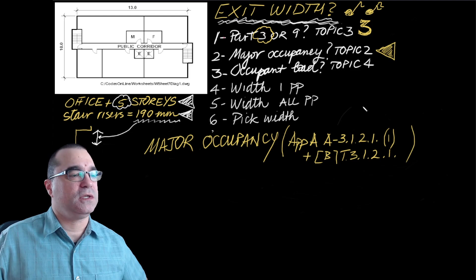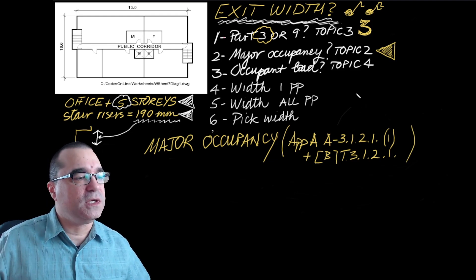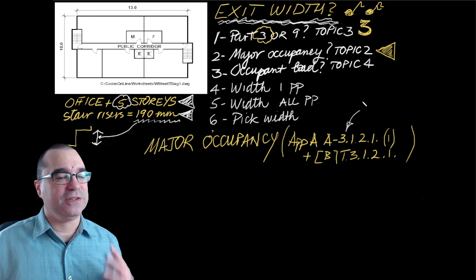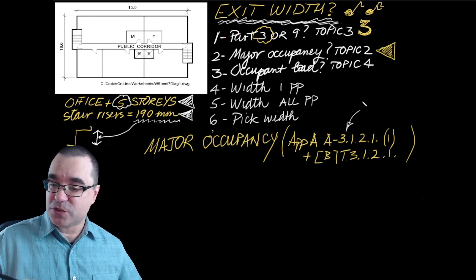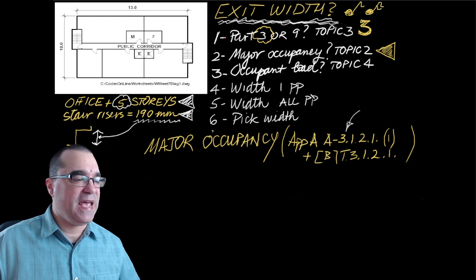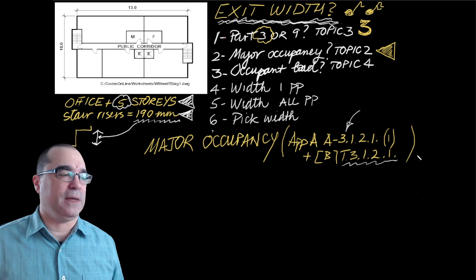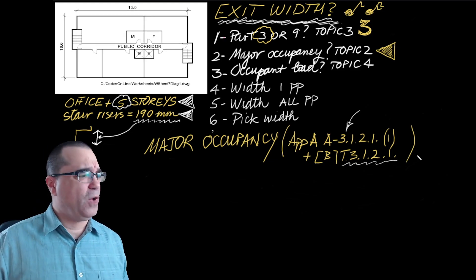My recommendation is to start first with Appendix A because this has the list of all the types of buildings. And then once we find our building under Appendix A, then we're going to go to Table 3.1.2.1 and that will give us the name of that major occupancy.